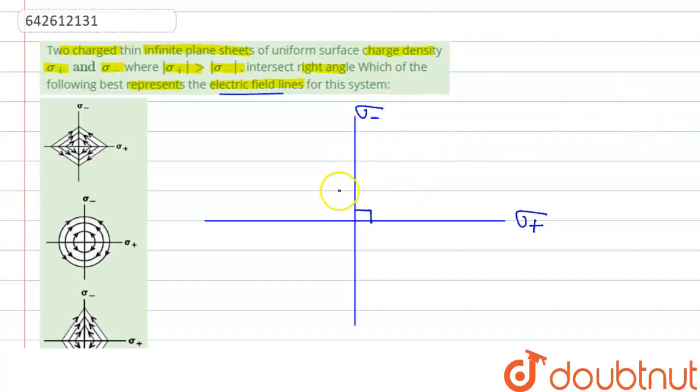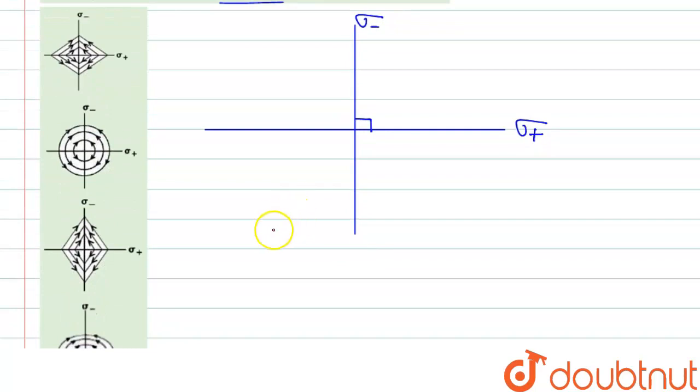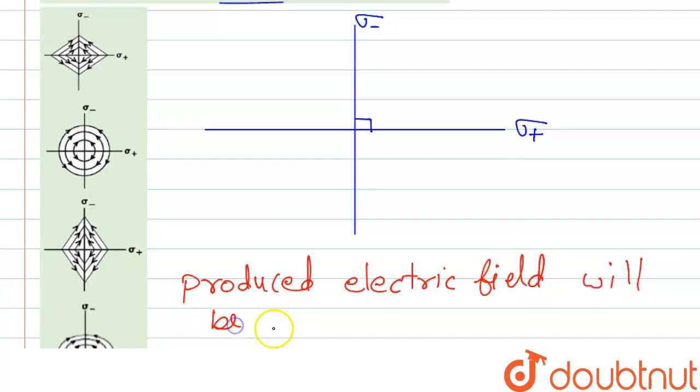Now we have to find the electric field lines. So in the question it is given that the mod of positive sigma is greater than the negative sigma. So here, as the charge is uniformly distributed, the produced electric field will be uniform.